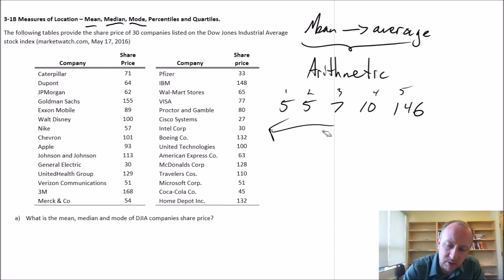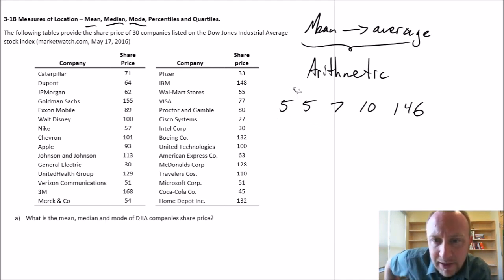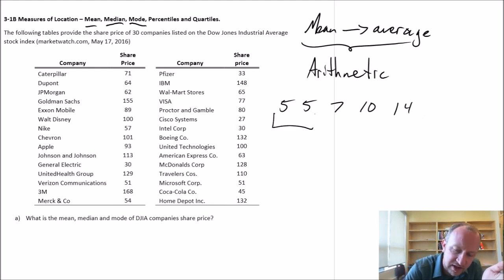The mode is similar in the sense that it's not impacted by the magnitude of any given observation, but the mode is identified by finding the observation that occurs with the highest frequency. In this case, I have two fives, a 7, a 10, and a 14. The fives occur twice, each of the other values only occur once, so this is my mode.